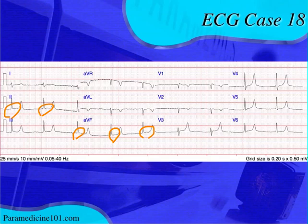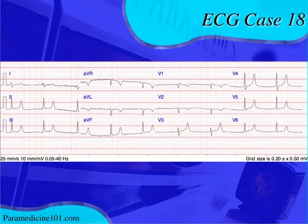I would probably chalk it up as a junctional rhythm because it is a narrow QRS complex, the rate fits where a junctional rhythm can be, it's pretty regular, and you don't have any fibrillatory waves. I'm not thinking this is AFib just by the looks of it — it's pretty regular. So I would call this a junctional rhythm, and that's a fair assumption.